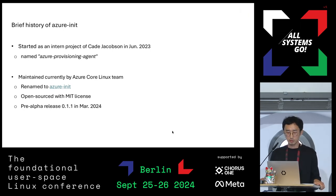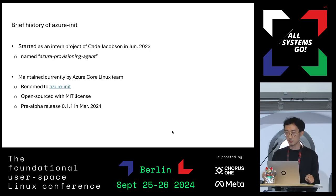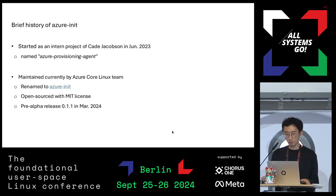I'm going to give a brief history of Azure Init. It started as an intern project by Kate Jacobson at Microsoft, and at the time it was named Azure Provisioning Agent — a little long. After a while, Kate left Microsoft and no one was maintaining it. The Azure Core Linux team picked up the project. It was renamed to Azure Init, a much shorter name, and open-sourced with an MIT license early this year, also tagged with version 0.1.1 pre-alpha release.